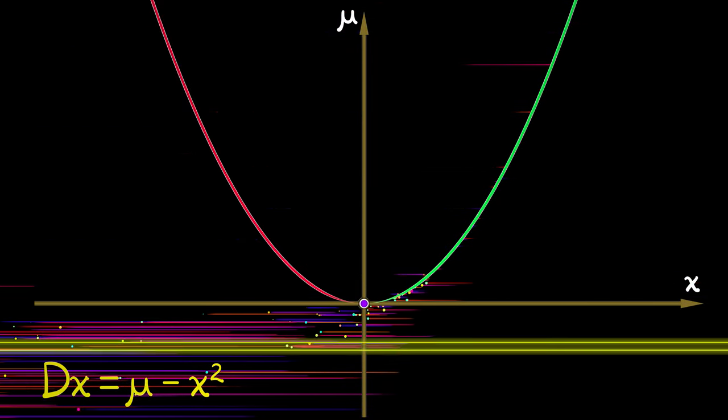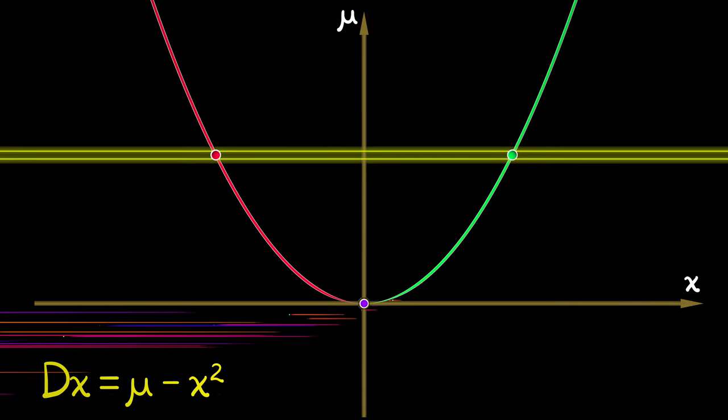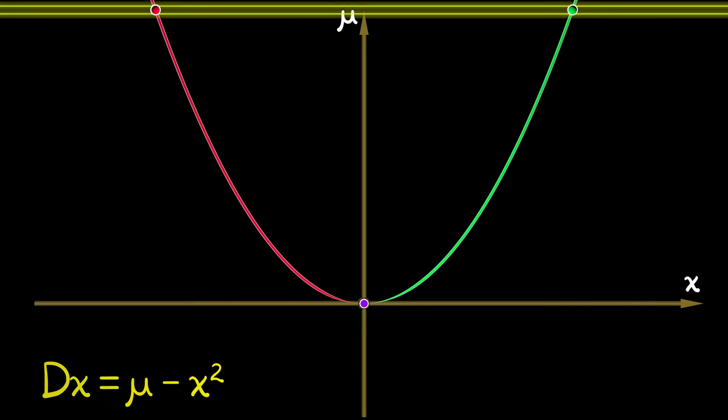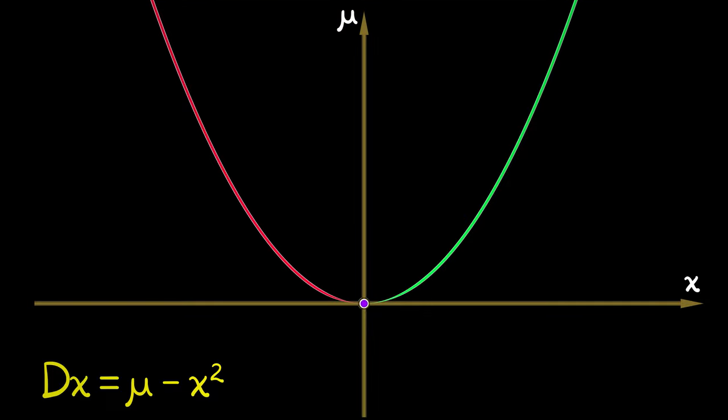Or if you run it in reverse, they appear out of nowhere when you turn the mu dial. This type of diagram is characteristic of the saddle node bifurcation.